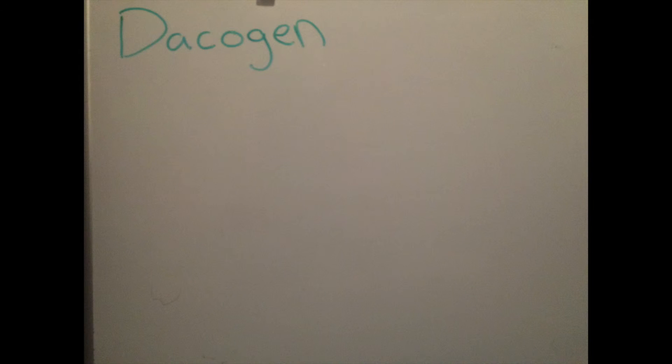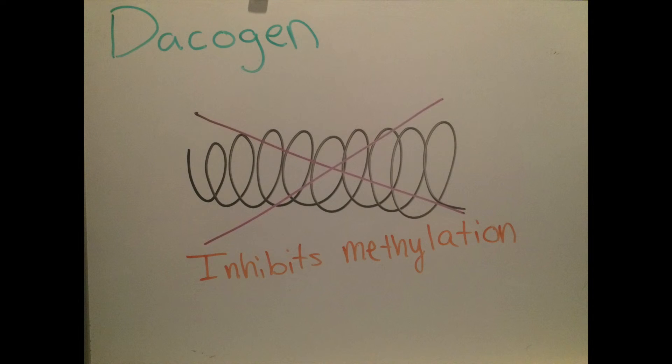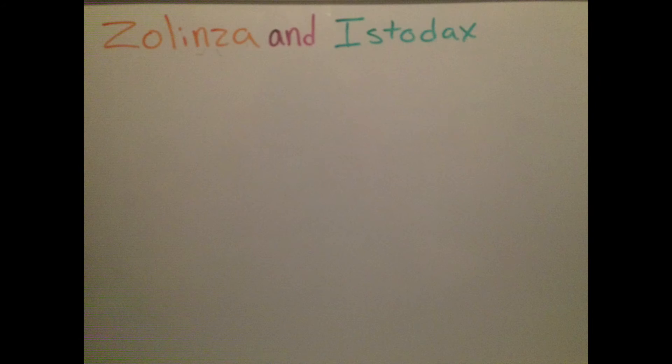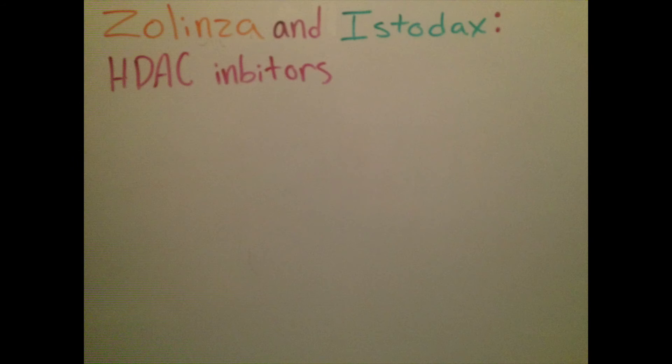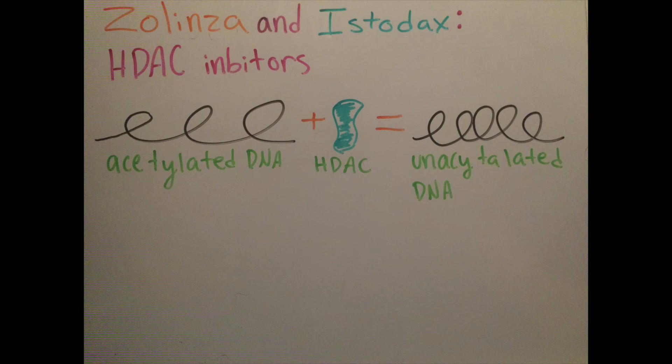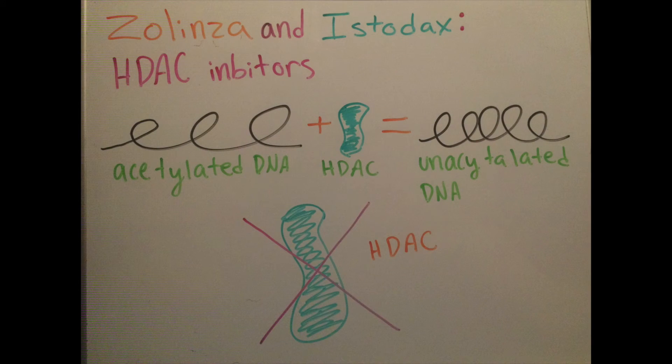Another similar drug is Dacogen, which inhibits methylation as well. Two other drugs, Zolenza and Istodax, are HDAC inhibitors. HDAC proteins actually remove acetyl groups from acetylated DNA, making the DNA much more difficult to read. Since these drugs inhibit HDAC proteins, the DNA is able to remain acetylated.